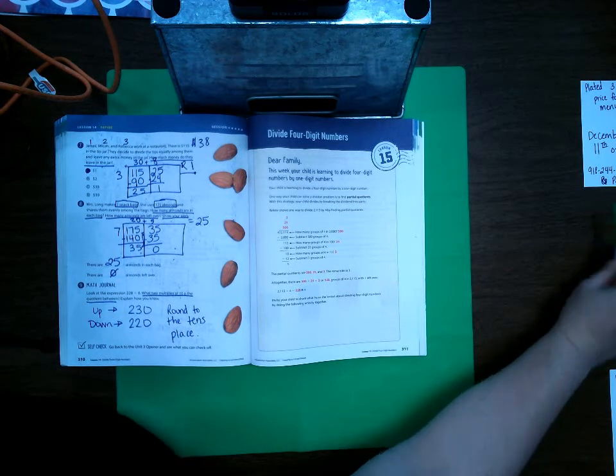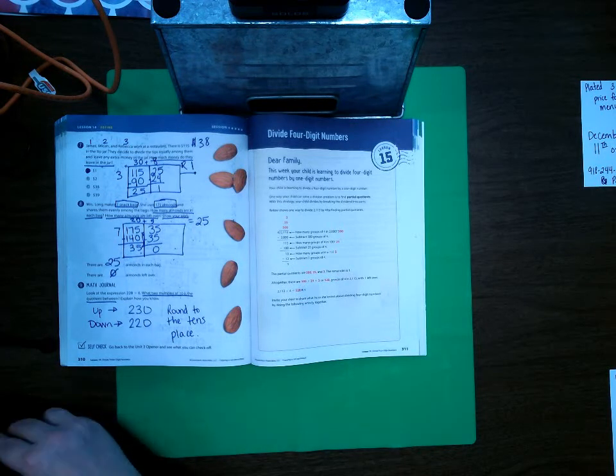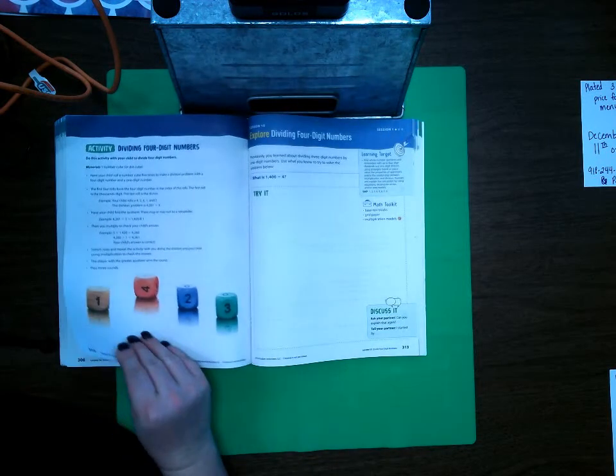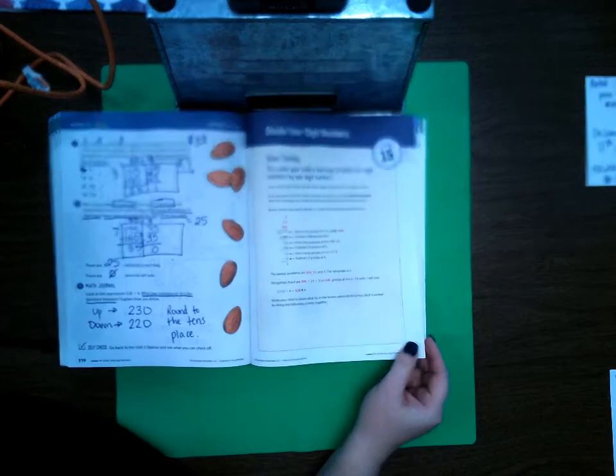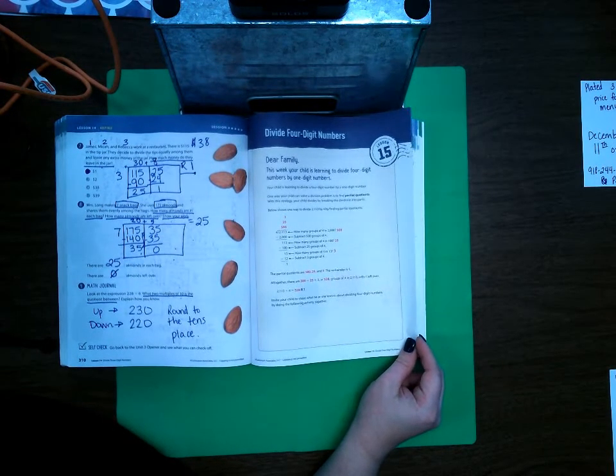This is Ready Classroom Mathematics Lesson 15. Students, this page right here, page 311 and 312, these two pages are pages for you to go over with your parents so that way they understand what we were learning about dividing four-digit numbers.